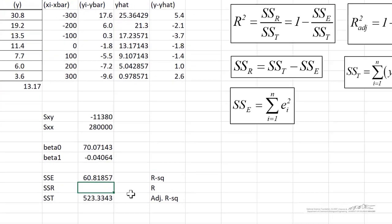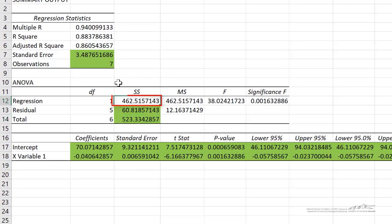Now that we know SST and SSE, we can use this equation to calculate SSR. That's just SST minus SSE. Essentially it's the amount of the total error that is accounted for by the regression model. And that's 462.5. Again, that's what we get using the regression tool. We get SSR of 462.5.